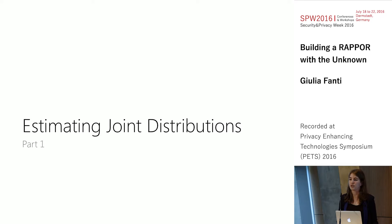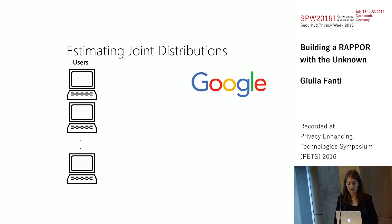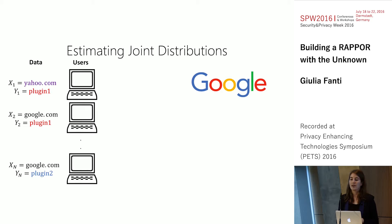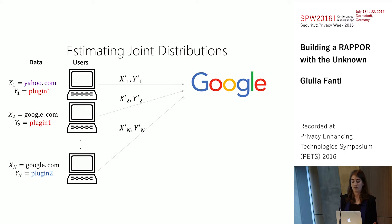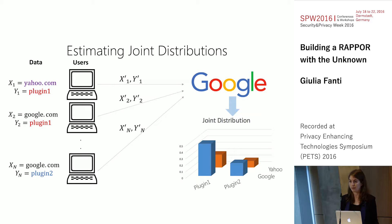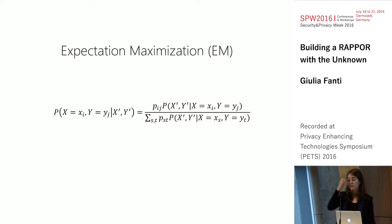Let's get started with part one: estimating joint distributions. The problem is you once again have users and an aggregator, but now the users might have multiple pieces of data — for example, a homepage and the last plugin that each user installed. Each user is going to independently randomize both of these pieces of data using the RAPPOR mechanism as a black box, and send those randomized reports to the aggregator. The aggregator wants to apply some post-processing to these noisy reports and recover the joint distribution of both variables, or an arbitrary number of variables. The challenge is designing that post-processing algorithm. Our approach is using the expectation maximization algorithm, or EM algorithm.